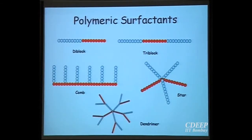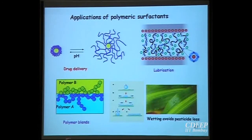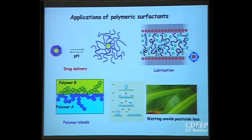There are polymeric surfactants of different geometries: di-block, tri-block, comb type, dendrimers, and stars. They can be used for drug delivery — for example, using pH-sensitive polyelectrolytes that shrink or expand under different conditions. They can be used for lubrication — polyelectrolytes attached on two surfaces repel each other, reducing friction. They can be used for compatibilization of polymer blends — a di-block polymer compatible with both polymer A and polymer B, when mixed with the two, gives a compatible polymer blend with a very uniform mixture.